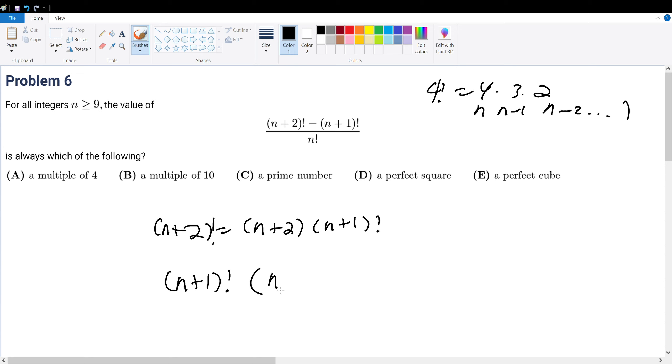To get parentheses n plus 2 minus 1 over n factorial. Now this and this can cancel. Why? Because this becomes n plus 1.